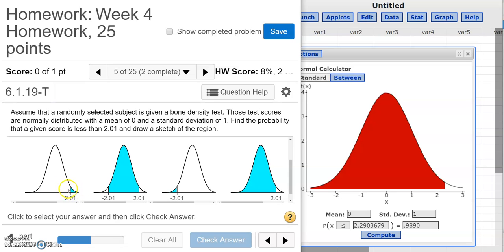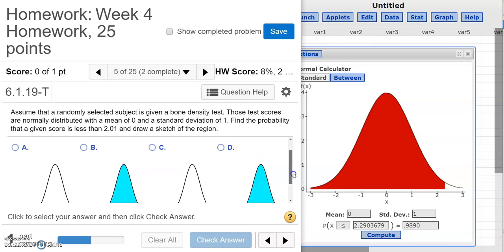But I'm looking for the probability that a score is less than 2.01. So it can't be this one, because in this one the area that's being shaded is more than 2.01. So it's not that. It can't be this one. This one is shading the area between negative 2.01 and positive 2.01. So it's not that. It can't be this one, because this is giving me an area that's less than something, but it's not less than 2.01. It's less than negative 2.01. So it's not that. It's got to be this one. Here's 2.01, and then we've shaded the whole area that is less than 2.01. So we're going to select that one.